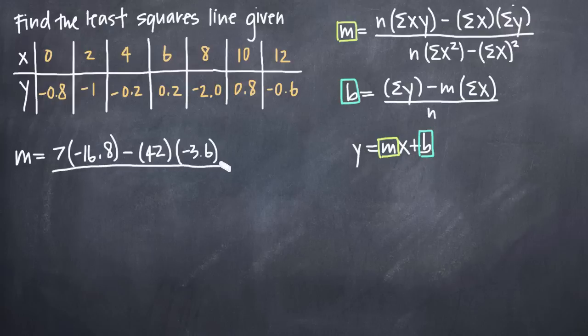And then in our denominator here, we have N. So we know that to be 7 times the sum of the squares of all of the x values. So what we're going to do is 0 squared plus 2 squared plus 4 squared plus 6 squared, etc. And when we take all the squares of those and add them together, we'll get 364. And then according to our formula, we'll take the sum of all the x values. We already know that to be 42. So now we're just taking 42 squared. So 42 squared will be 1764.